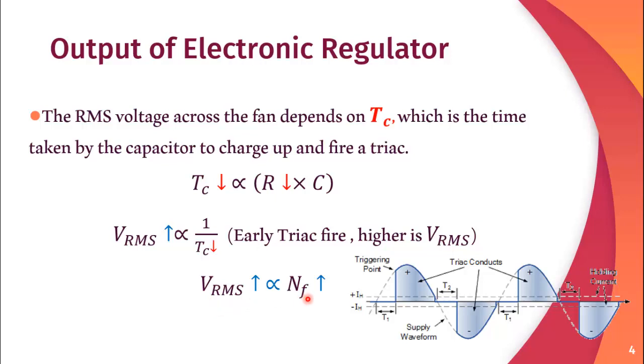So now we understand how can we increase or decrease the speed of the fan with the help of an electronic regulator.